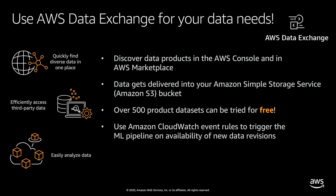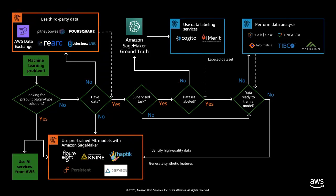AWS Data Exchange makes it easy to consume dataset products on AWS. The dataset gets delivered into your S3 bucket, and once it becomes part of your data lake, you can use the tools you generally use and perform analysis. Once you have identified and procured the data, you would need to identify the type of machine learning task to perform. If the task is a supervised learning task, you would need a labeled dataset. You can use Amazon SageMaker Ground Truth, and AWS Marketplace also has listings from third-party data labeling service vendors.